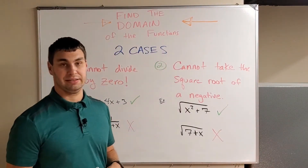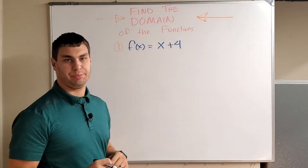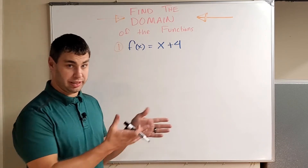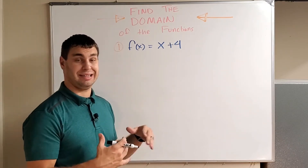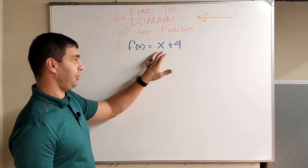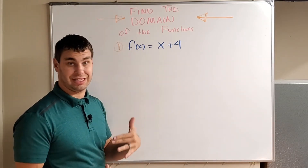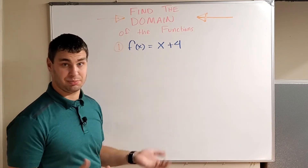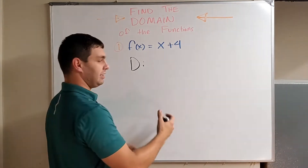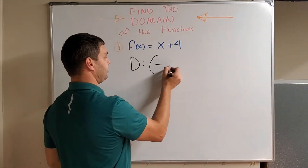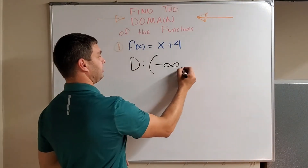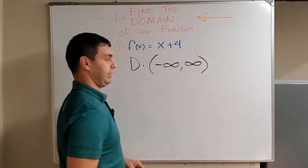We're going to show you how to write some of these domains here. First example says f(x) = x + 4. If you think about our two cases — we cannot divide by zero and we cannot have a negative under a square root — that's never going to happen in this problem. No matter what I plug in for x, I'm not dividing by zero, and there's no square root anywhere. So the domain is all real numbers, or you can write it from negative infinity to positive infinity.